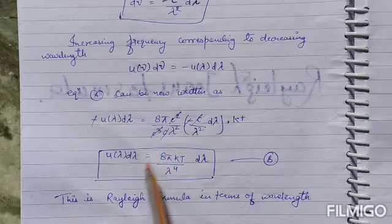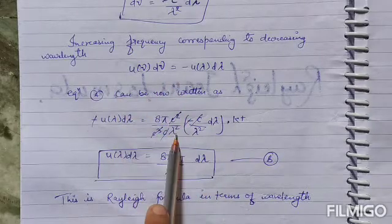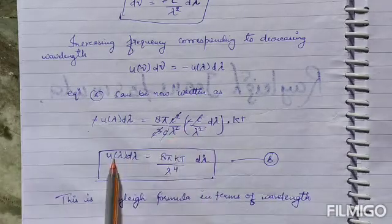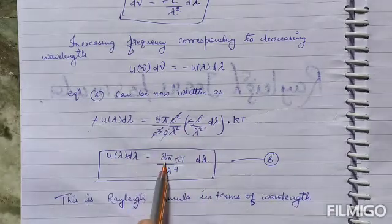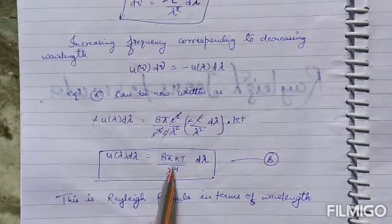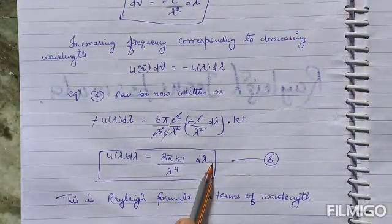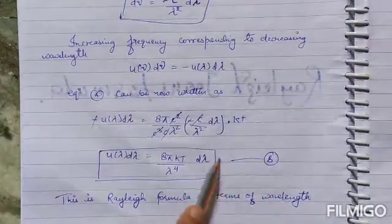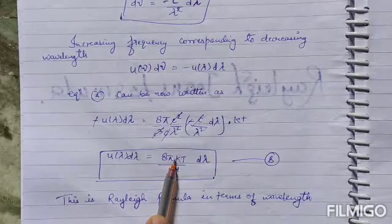We have λ⁴ in the denominator from λ² times λ². Then u(λ)dλ equals 8πkT/λ⁴ dλ. This is the Rayleigh formula in terms of wavelength.